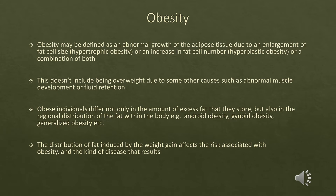Certain other conditions may give rise to excess weight, for example abnormal muscle development or fluid retention as seen in edema. These conditions are not labeled as obesity. The distribution of fat in obese people may differ. Fat may be distributed in the central abdominal region — called android or central obesity — or in the thighs and buttocks, called gynoid obesity.